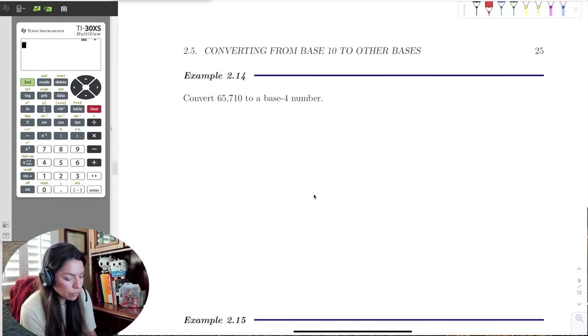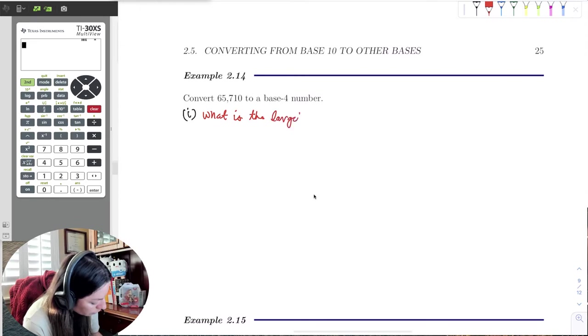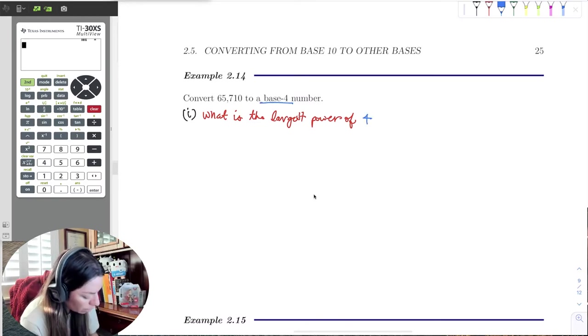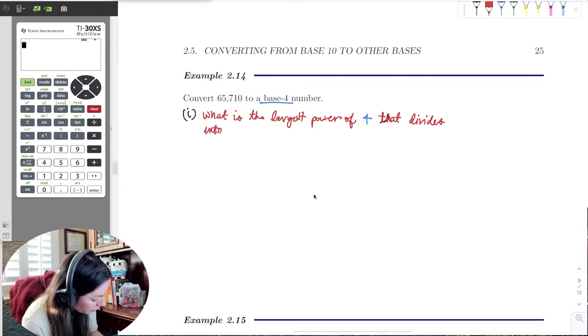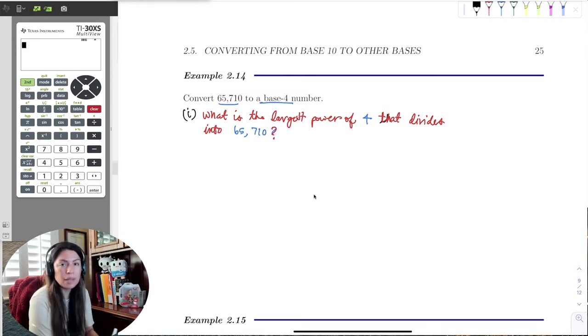So the first question we always want to ask is what is the largest power of the base, of the base 4, that divides into the base 10 number 65,710? So this is a pretty large number, so we're going to have to run through some powers of 4 here.